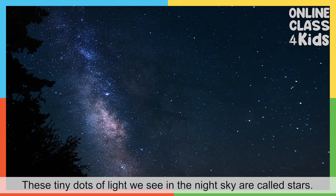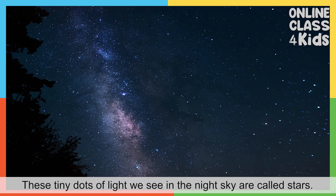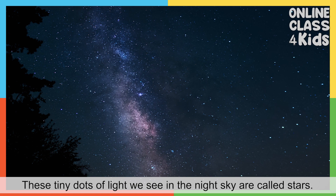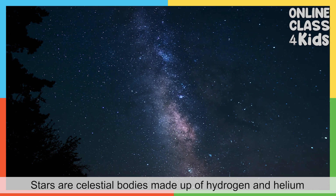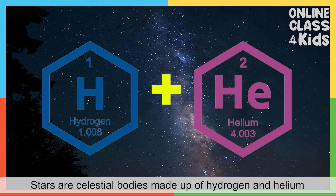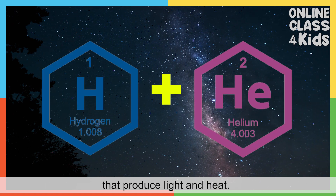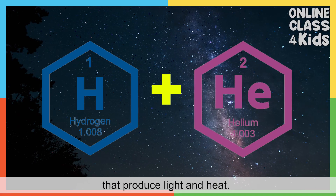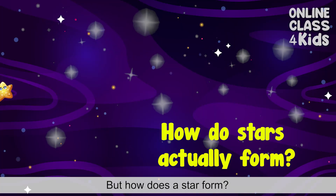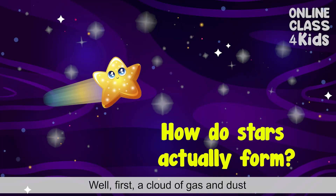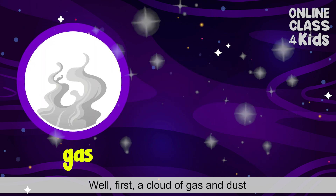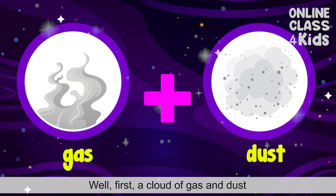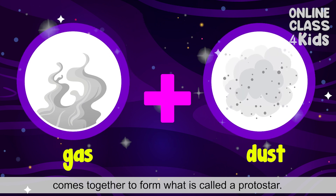These tiny dots of light we see in the night sky are called stars. Stars are celestial bodies made up of hydrogen and helium that produce light and heat. But how does a star form? Well, first a cloud of gas and dust comes together to form what is called a protostar.